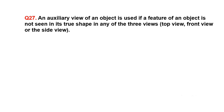An auxiliary view of an object is used if a feature of an object is not seen in its true shape in any of the three views. A. True, B. False.